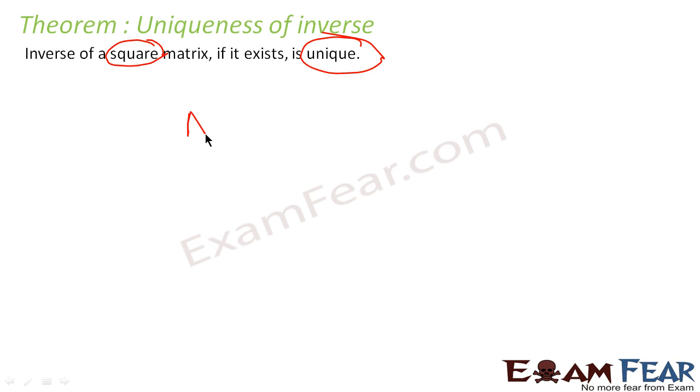In other words, for one square matrix A, you can't have two different inverses. A inverse has to be unique; there can only be one inverse of a square matrix.